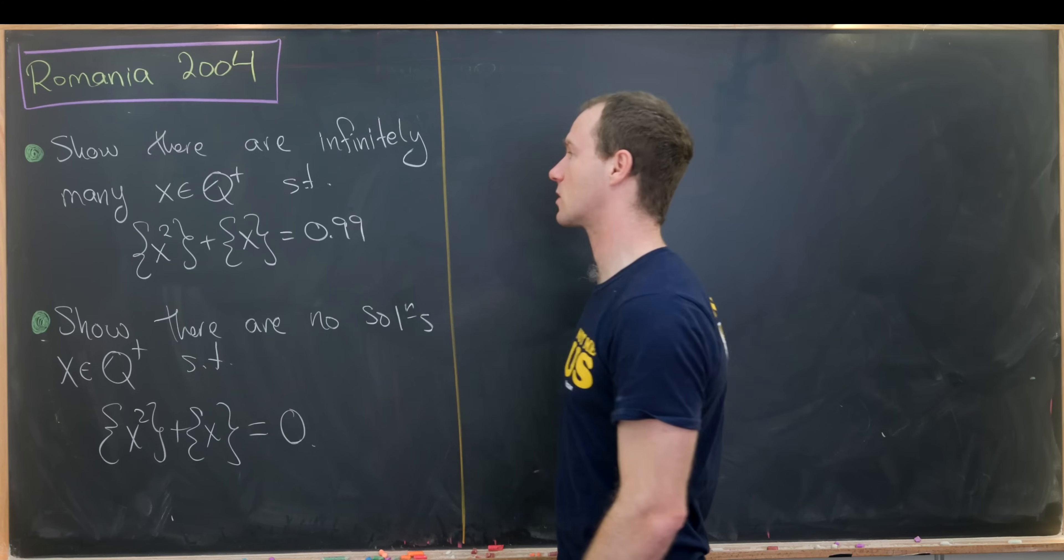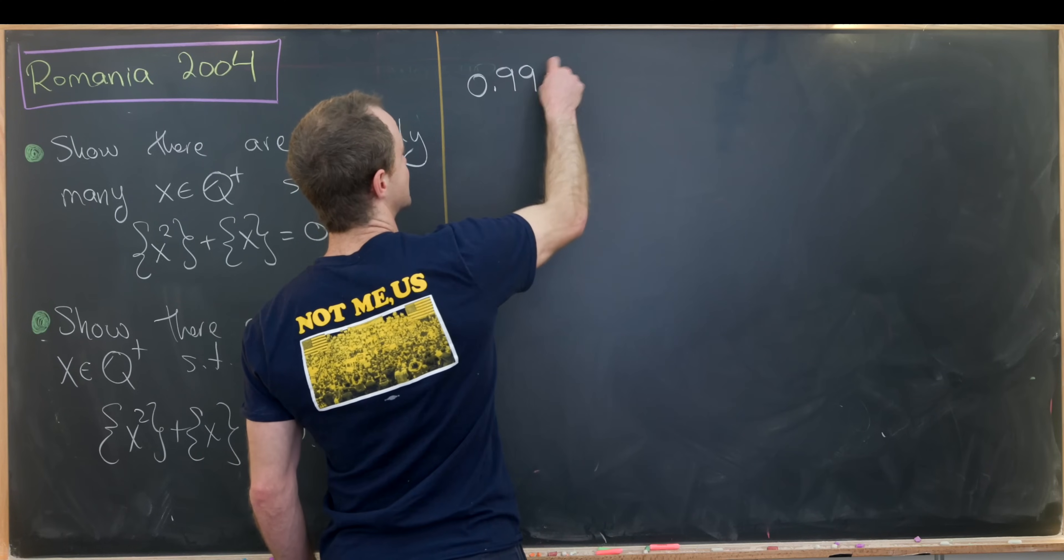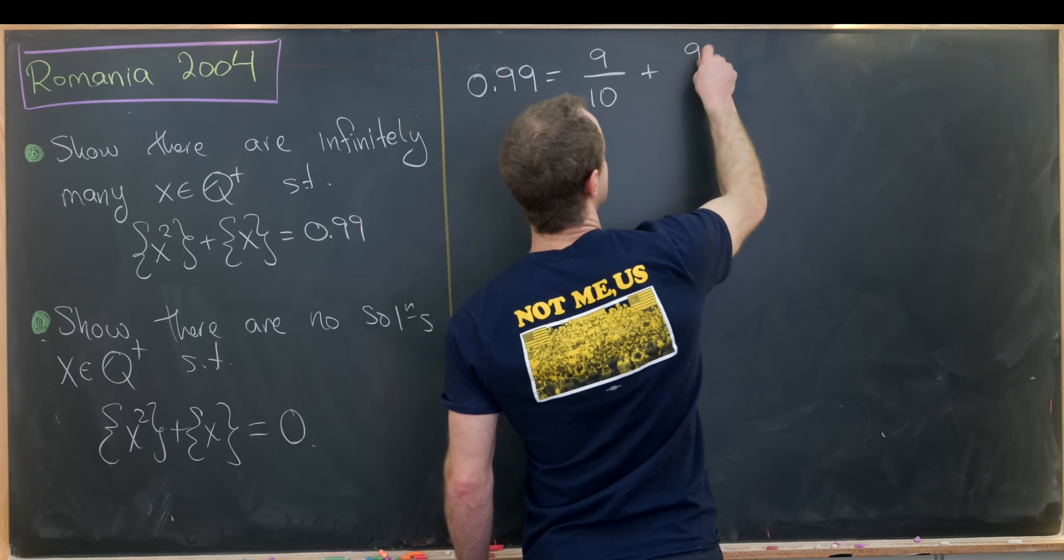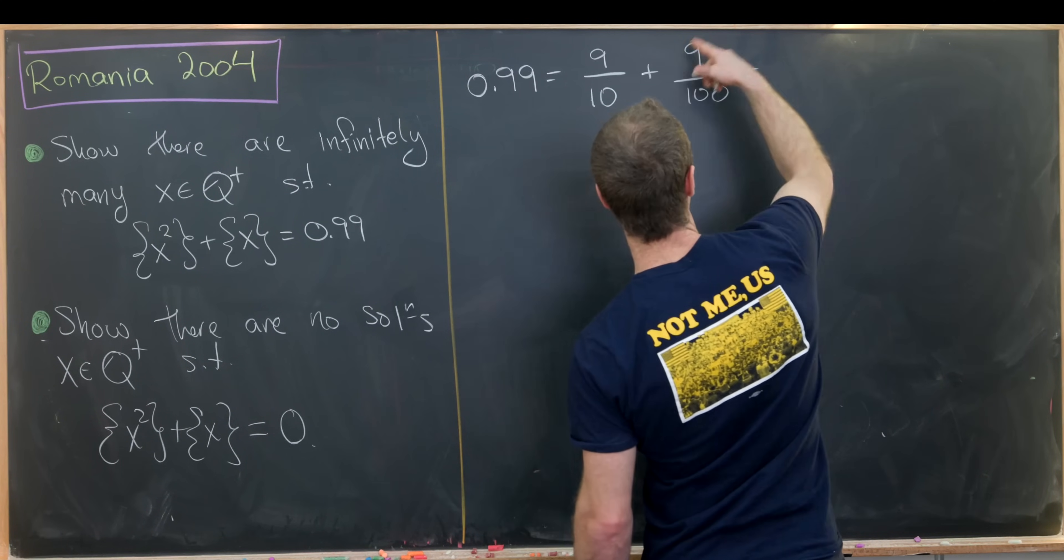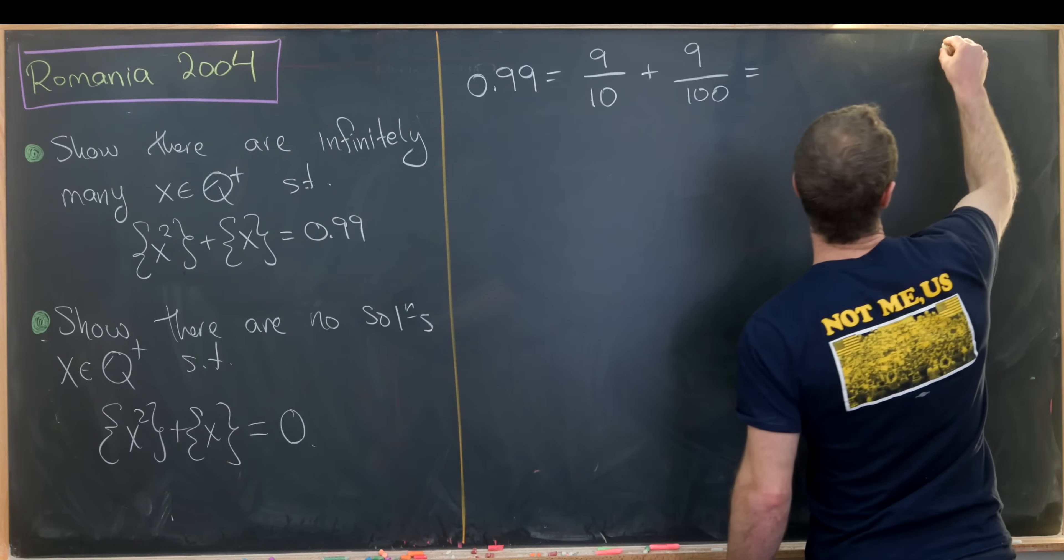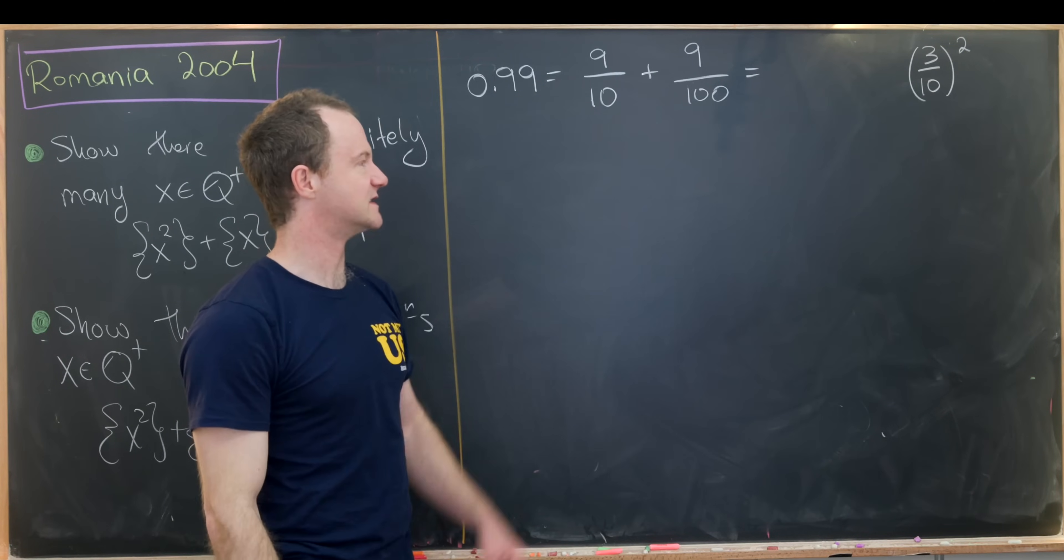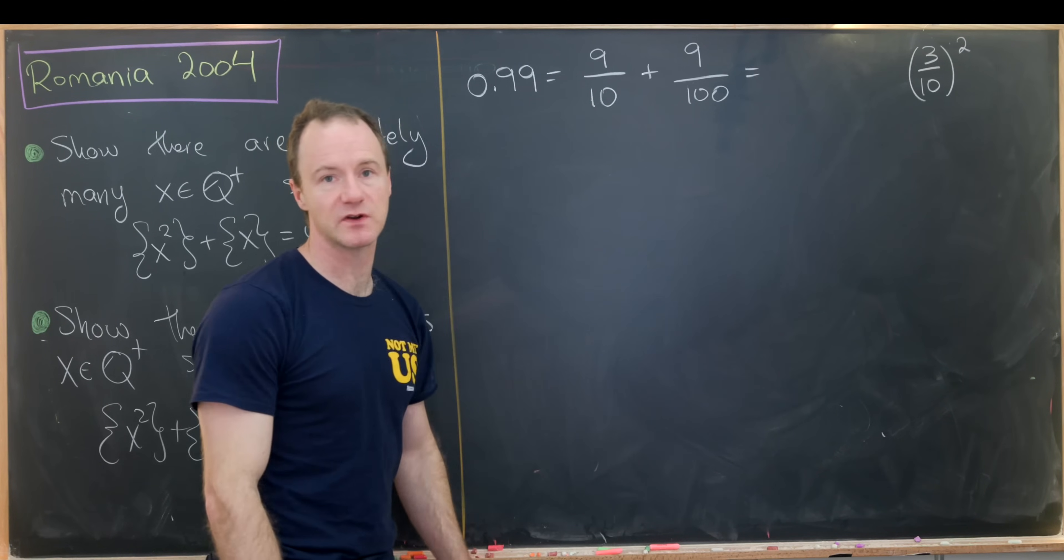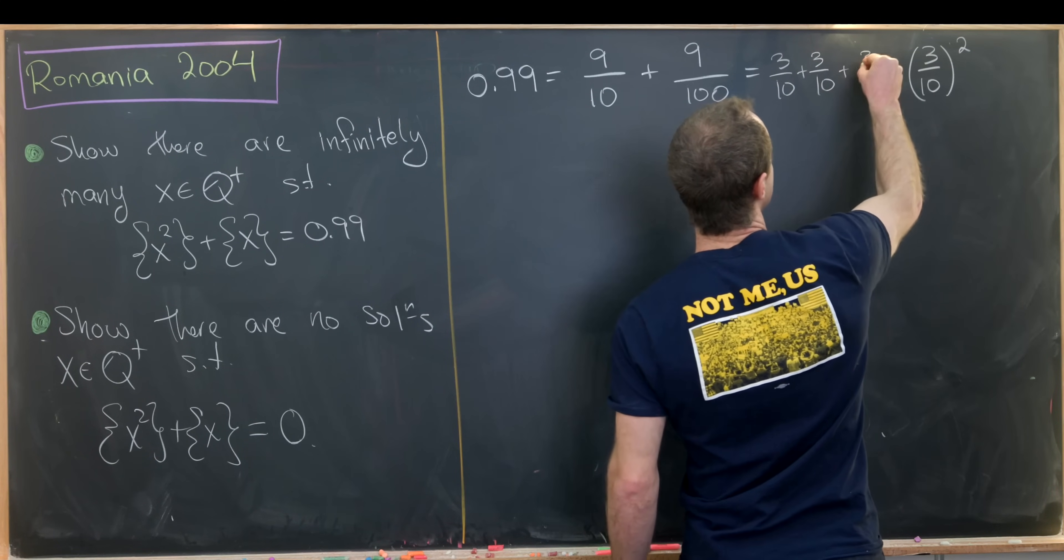Let's look at our solution to this first part. We start with the following observation that 0.99 is the same thing as 9 over 10 plus 9 over 100. Furthermore, this 9 over 100 is something squared. We want to realize it is something squared because we've got this x squared term. So in particular, 99 over 100 is 3 over 10 quantity squared. Furthermore, this 9 over 10 can be written as 3 over 10 plus 3 over 10 plus 3 over 10.